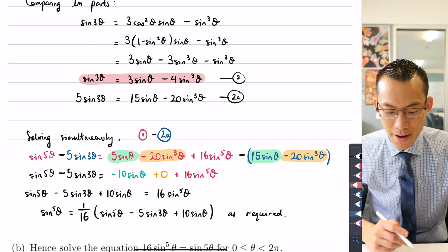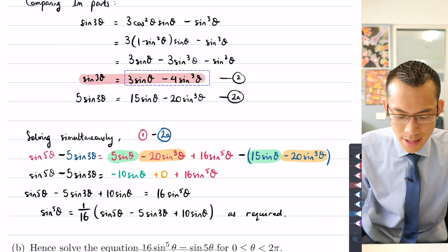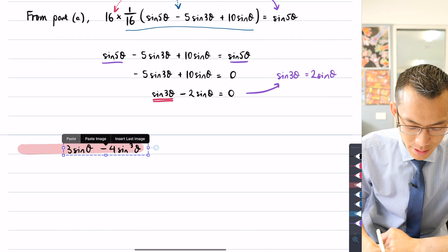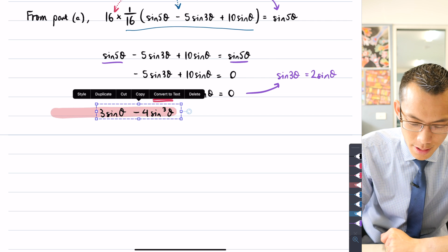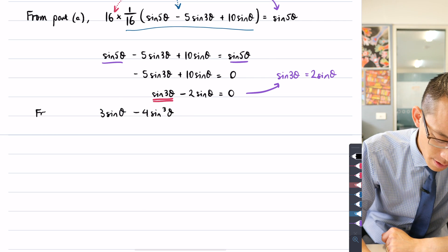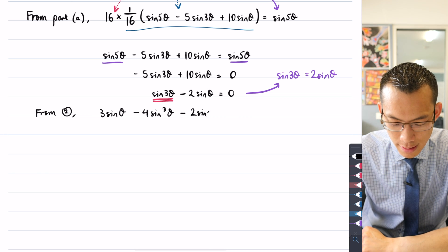It's equal to 3 sinθ minus 4 sin³θ. So what I'm going to do is I'm going to take this and substitute it for the sin 3θ that I have on the left-hand side. So this is from equation 2.